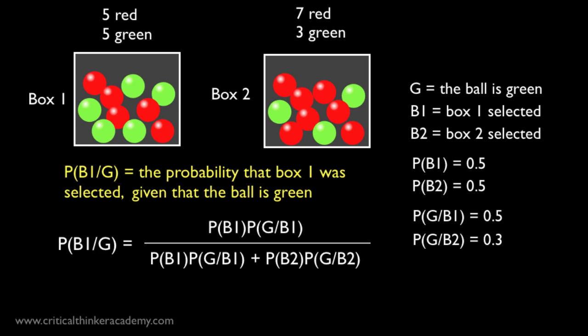This is Bayes' Rule for this particular question. And notice that every term in this expression is known. They're all on the side in the information given. So now we just substitute, and we get this.